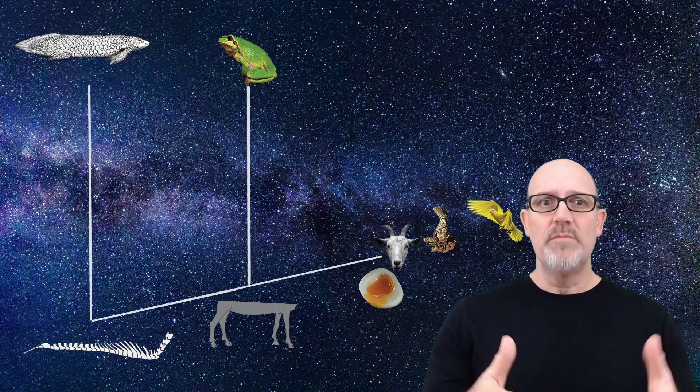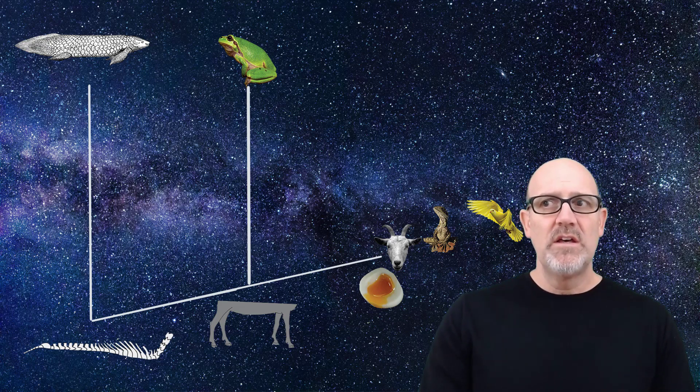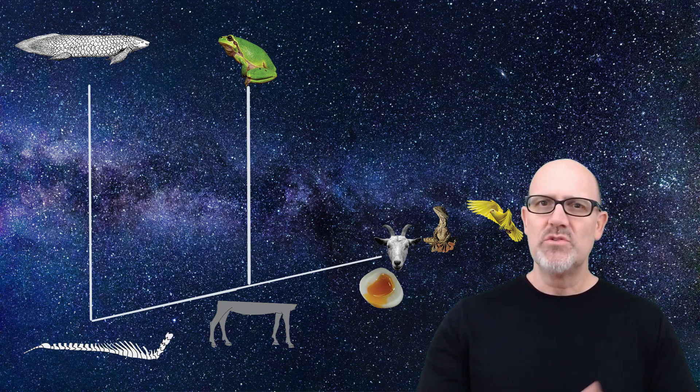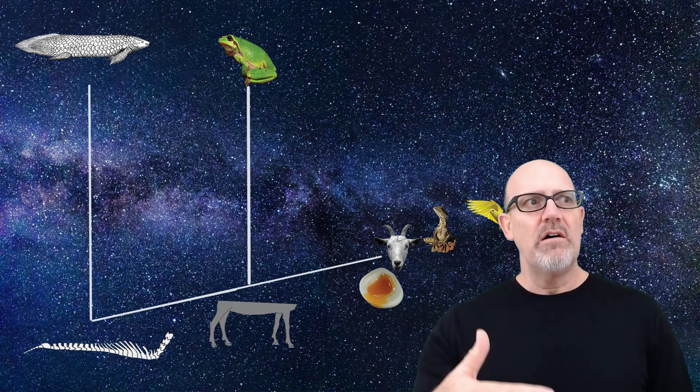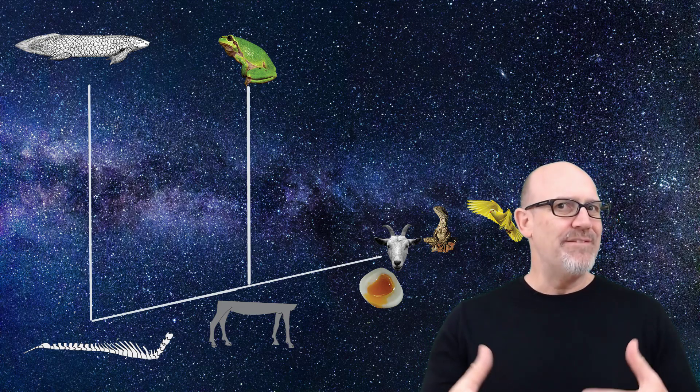To find the next evolutionary group, we want to find a trait that three of the four remaining animals share. It turns out that the goat, the lizard and the bird all use amniotic eggs when reproducing. Amniotic eggs possess a series of fluid-filled membranes that permit the embryo to survive outside of water. The frog doesn't have those kinds of eggs, so the ancestor to the frog becomes our next most primitive group, and the amniotic egg becomes our next evolved trait.